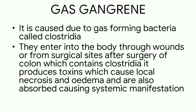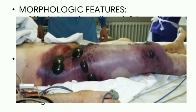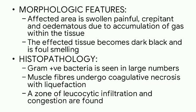Gas gangrene is caused by gas-forming bacteria called Clostridia. They enter the body through wounds or from surgical sites after surgery of the colon, which contains Clostridia. It produces toxins which cause local necrosis and edema, and are also absorbed causing systemic manifestation. The morphological features are that the affected area is swollen, painful, and crepitant, with edema due to accumulation of gas within the tissue. The affected tissue becomes dark black and has a foul smell. Histologically, there is coagulative necrosis with liquefaction, and a zone of leukocytic infiltration and congestion.